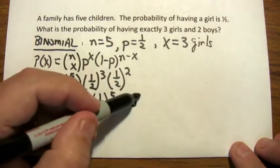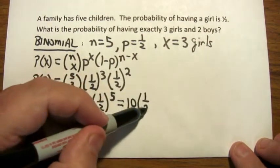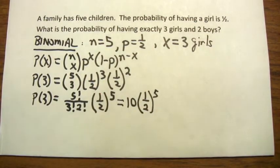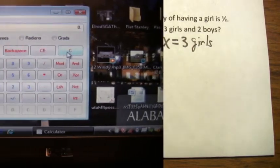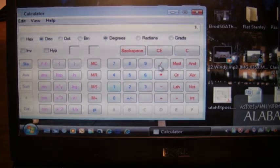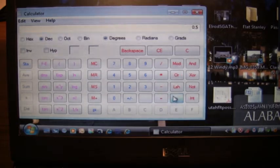I'm left with having to multiply 10 by the quantity one-half to the fifth. At this point, I can go back to my calculator again and do one-half to the fifth and then multiply that result by 10. So, now that I'm back to my calculator, I wanted to raise one-half, that's one divided by two, which of course is just 0.5. I want to raise that to the fifth power. So, I'll go over here and hit the X to the Y button, choose the fifth power.